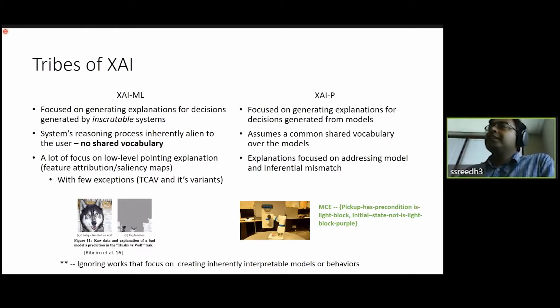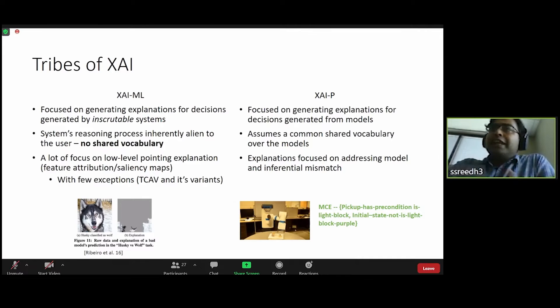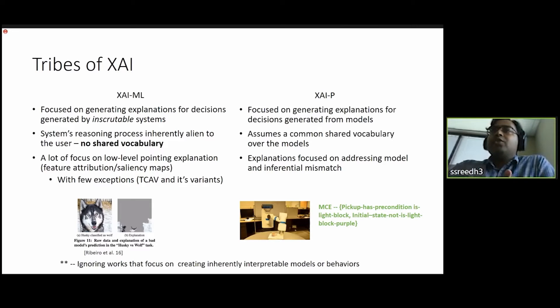So to start with, at least kind of making some simplification on the community, I would largely classify most of the work being done in XAI into two groups. One, I'll just call XAI-ML, which includes a lot of work that's being done both in RL and single-shot decision-making on generating explanations for decisions made through inscrutable systems. And by that, I mostly mean neural network-based systems. And like people said in the panel, even though I wrote it independently, the problem is you're faced with an alien intelligence and you're trying to make sense of the reasoning. And you have no shared vocabulary to begin with.